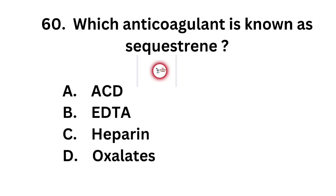Question number 63. Which anticoagulant is known as sequestrine? Option A: Acid. Option B: EDTA. Option C: Heparin. Option D: Oxalates.